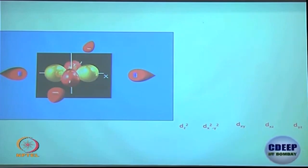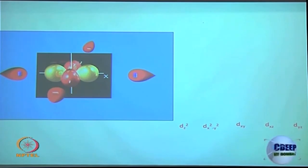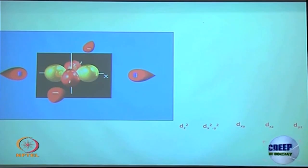For d_x²-y², the four ligands are coming along all the axes. One way to think about it: d_x²-y² has 4 lobes divided among 4 ligands, and d_z² has 2 lobes divided among 2 ligands — that is approximately why they end up at the same energy.